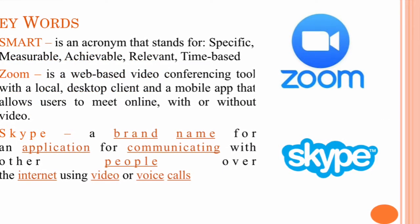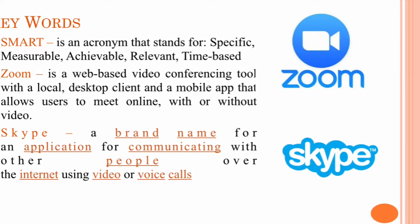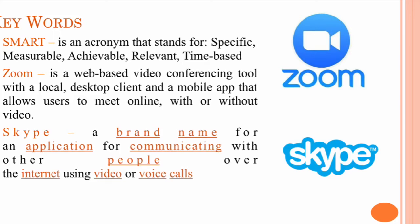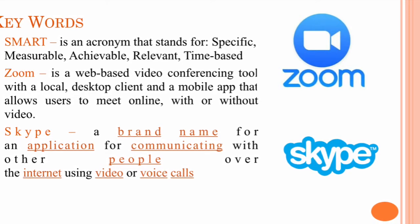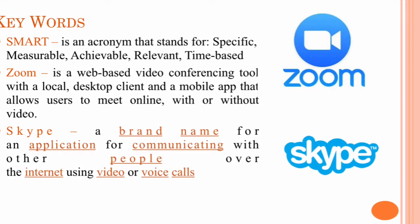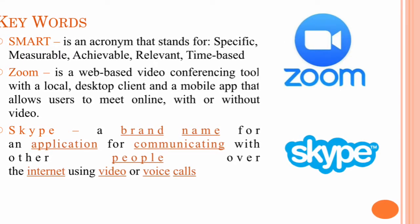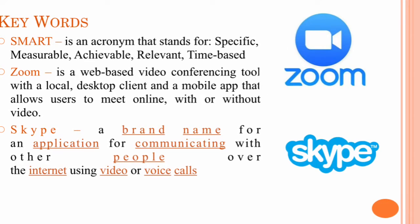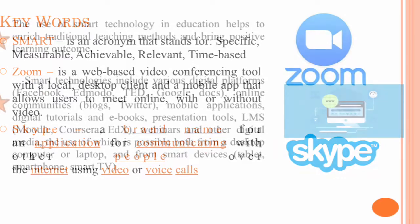Keywords. SMART is an acronym that stands for Specific, Measurable, Achievable, Relevant, Time-based. Zoom is a web-based video conferencing tool with a local desktop client and a mobile app that allows users to meet online with or without video. Skype is a brand name for an application for communicating with other people over the Internet using video or voice calls.